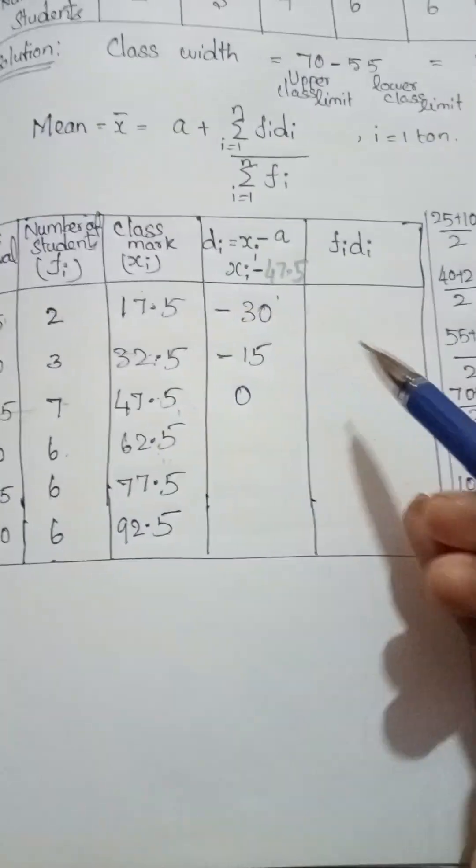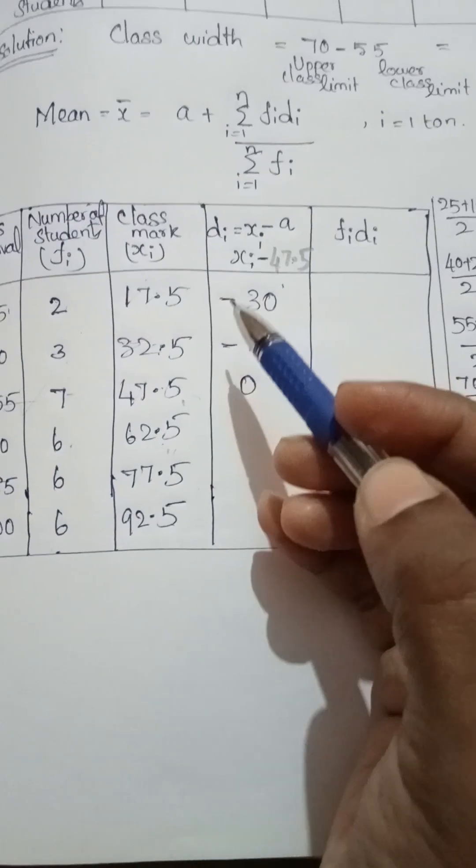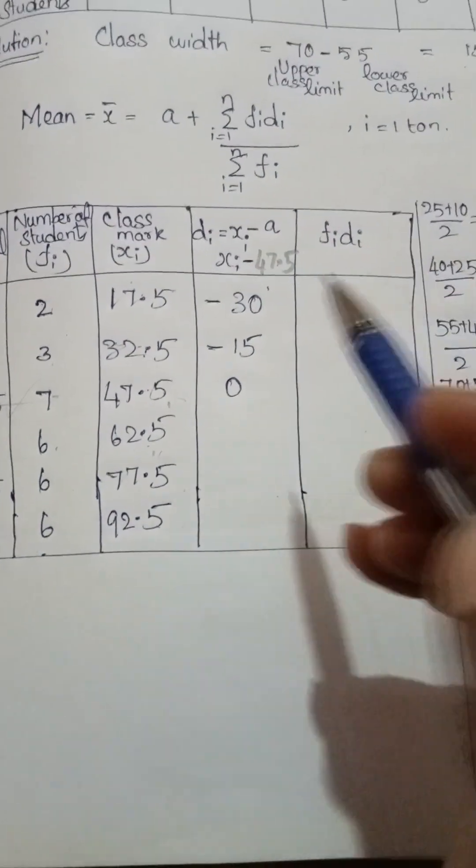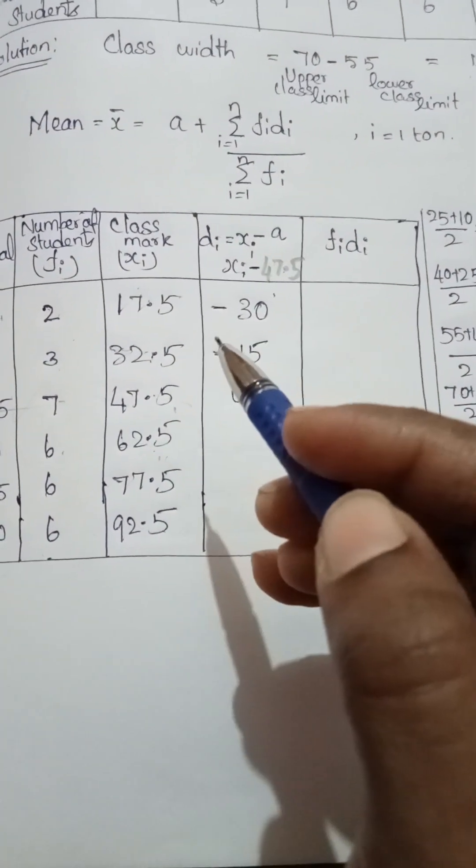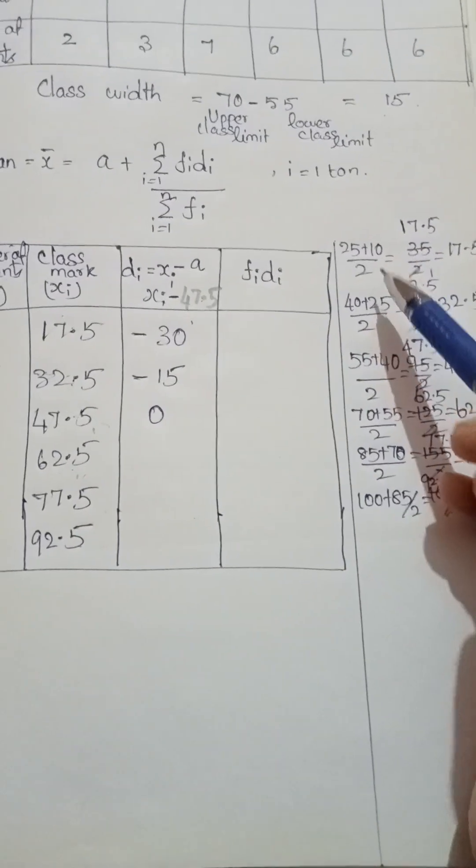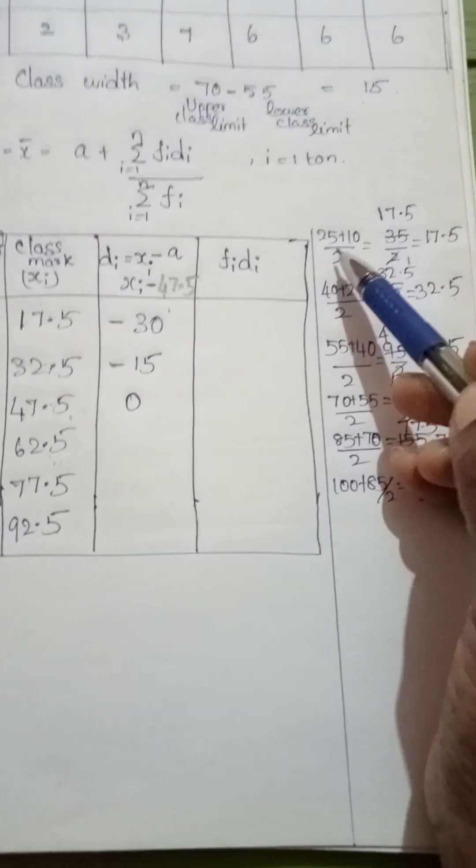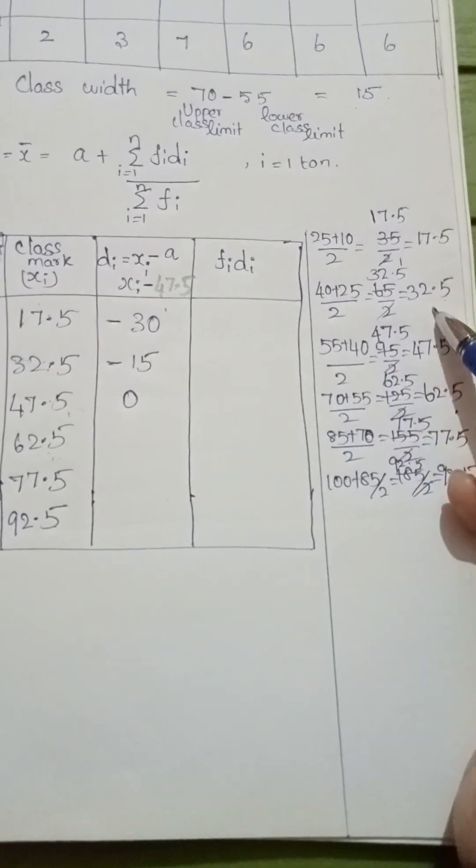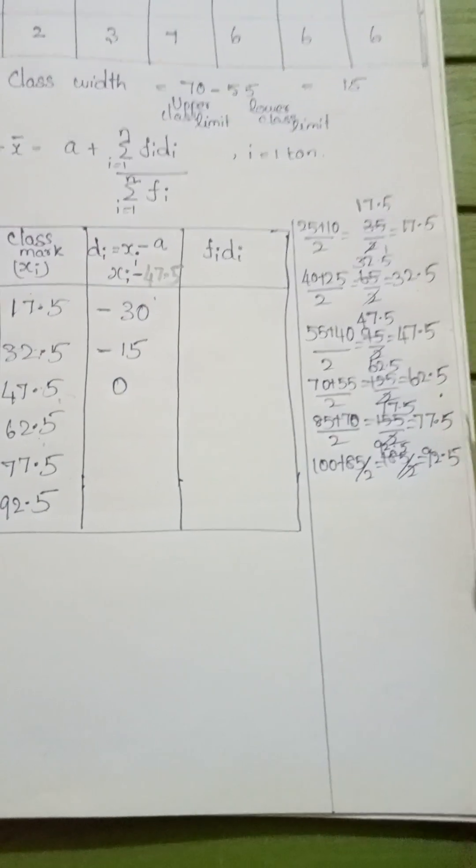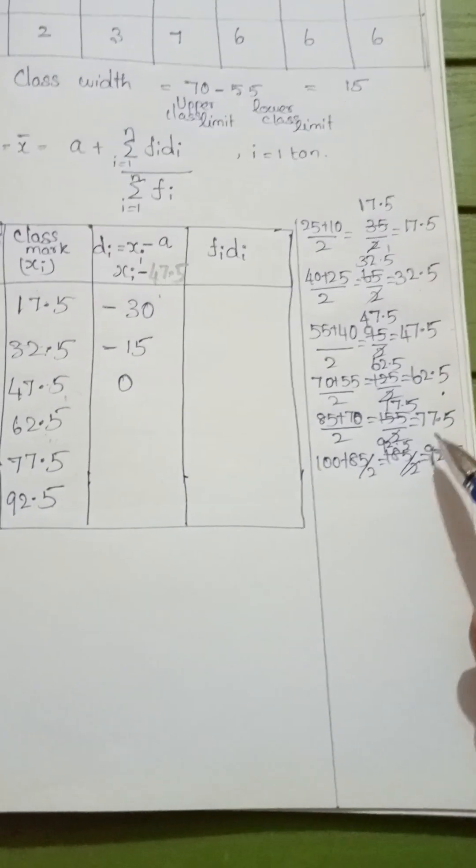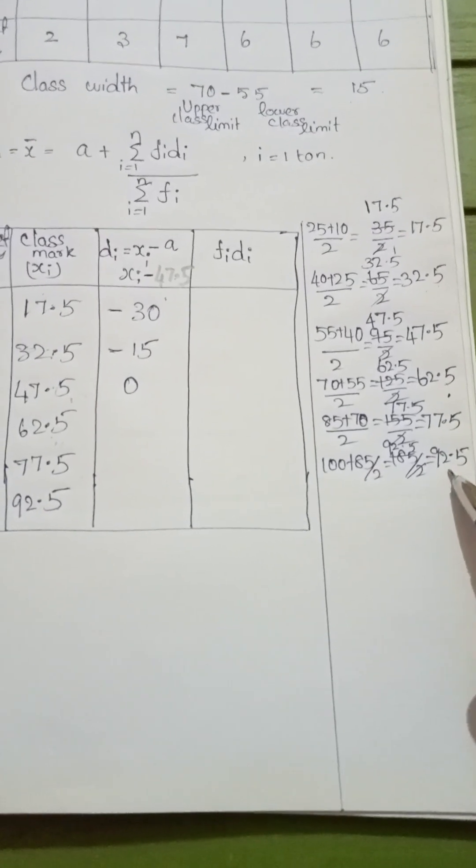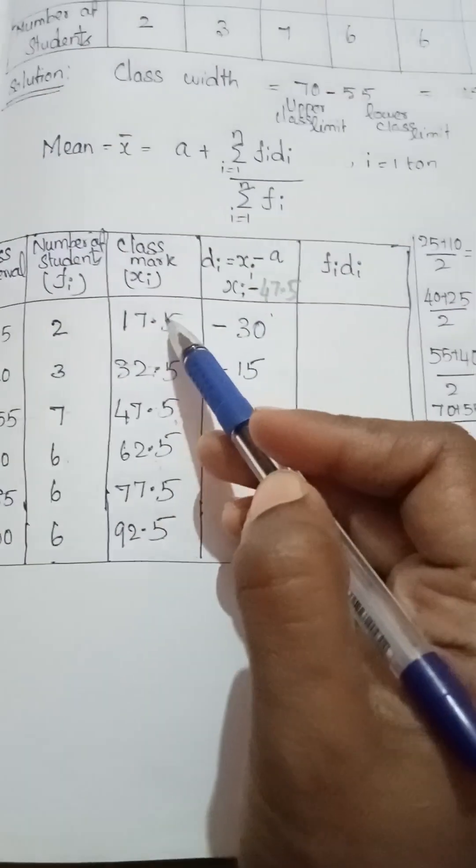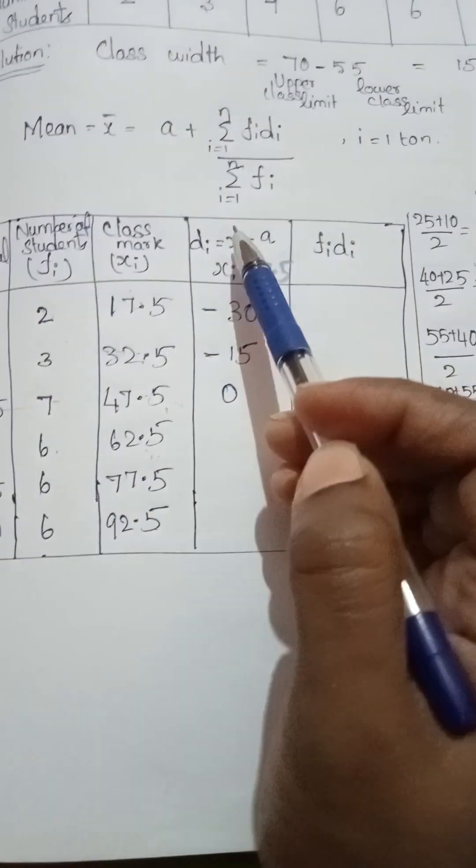Next one class mark xi. You know the formula: xi equals upper class limit plus lower class limit divided by 2. The average is the class mark. So you find all the class marks: 25 plus 10 by 2 equals 17.5, next one 32.5, next one 47.5, next one 62.5, next one 77.5, next one 92.5. You write all the values.